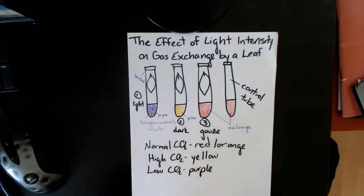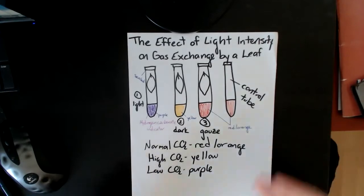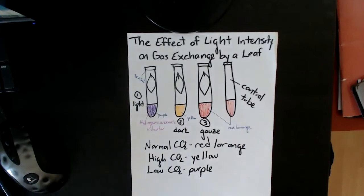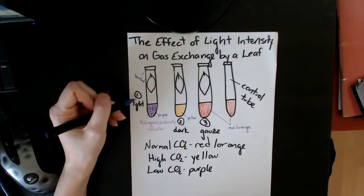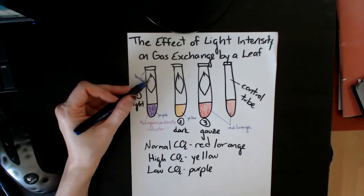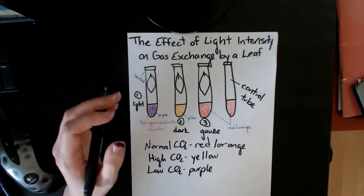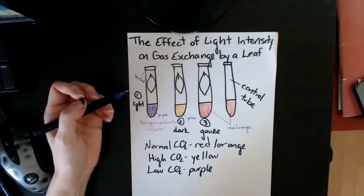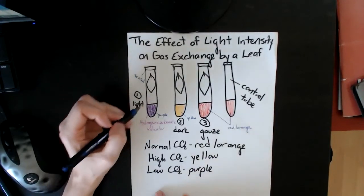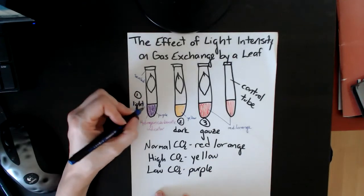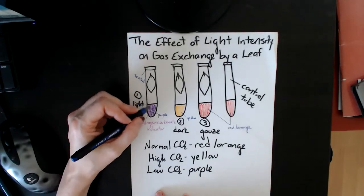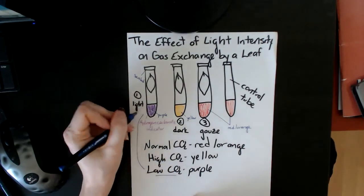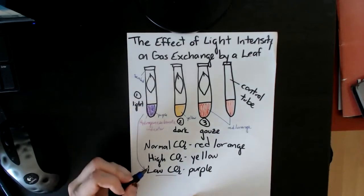So those are the colors that you end up with, and that tells you how much carbon dioxide is actually present in the tube, and then what that tells you is what the gas exchange is, how much gas exchange is happening. So in the light, there's a lot of light around, and so all leaves, all the time, are doing respiration. And if there's light around, then they will also be doing photosynthesis. So the idea is that with this one, it's in the light, so this one is doing a lot more photosynthesis than it is respiration, and so you have low CO2.